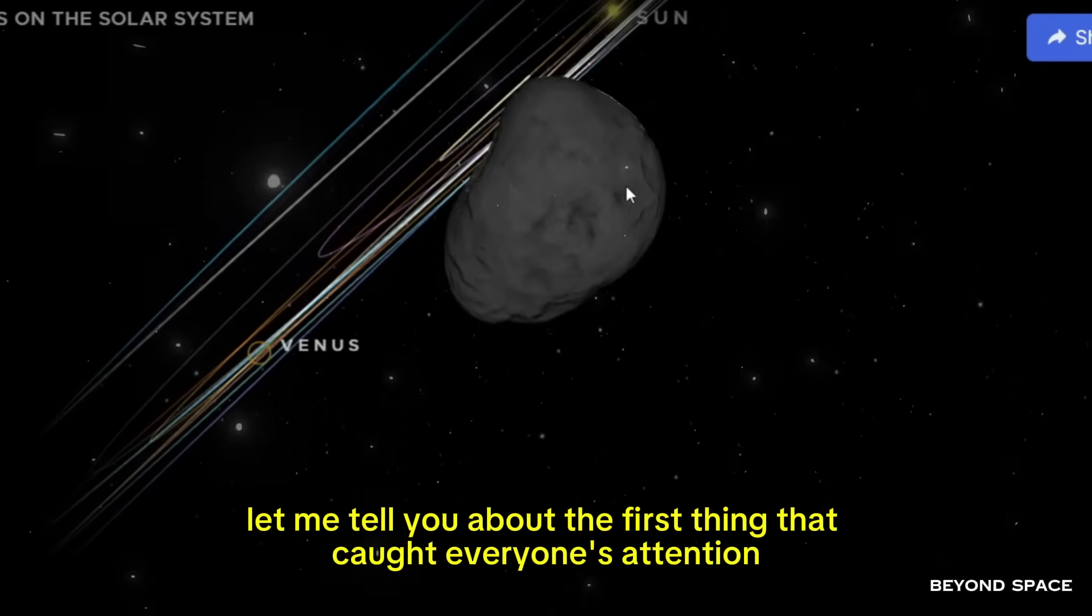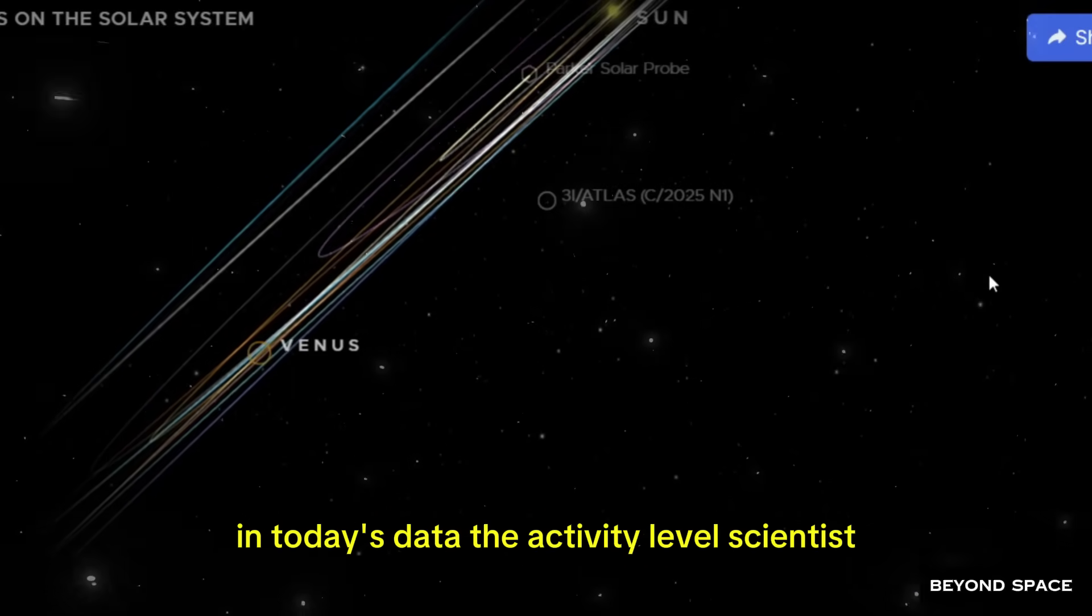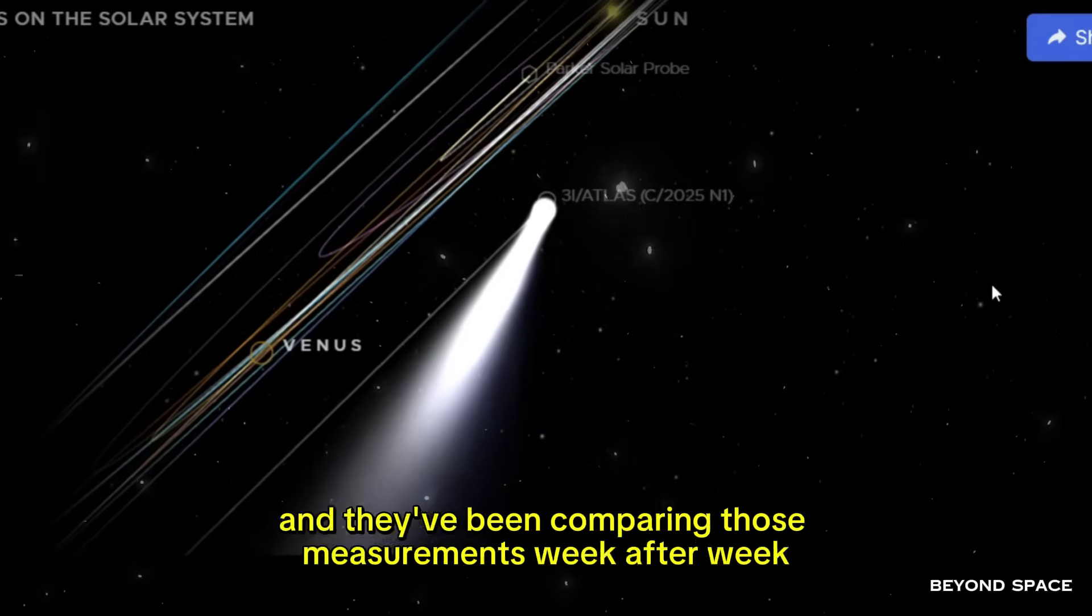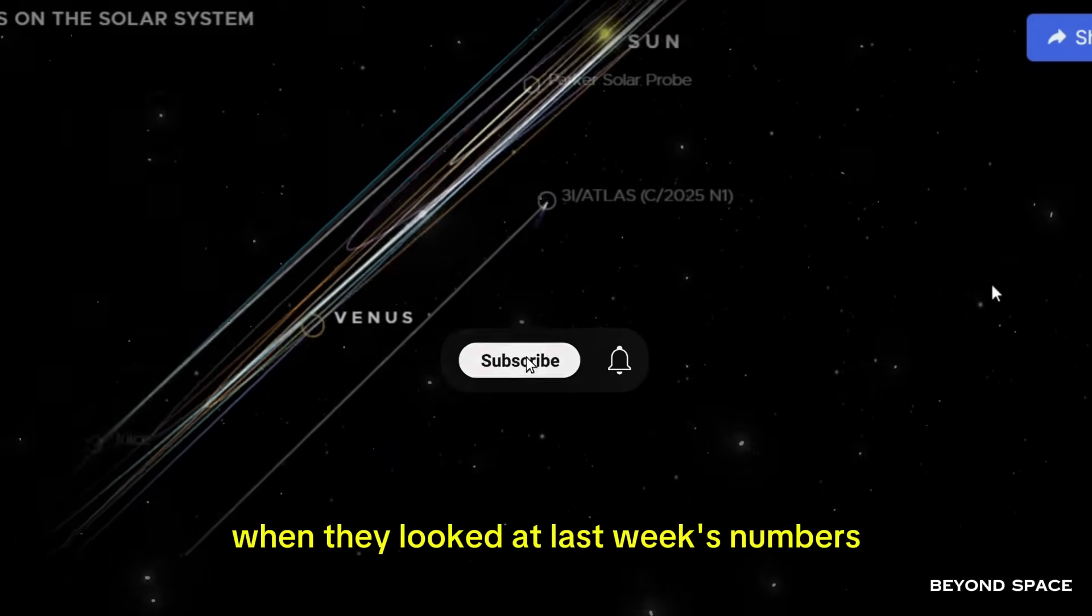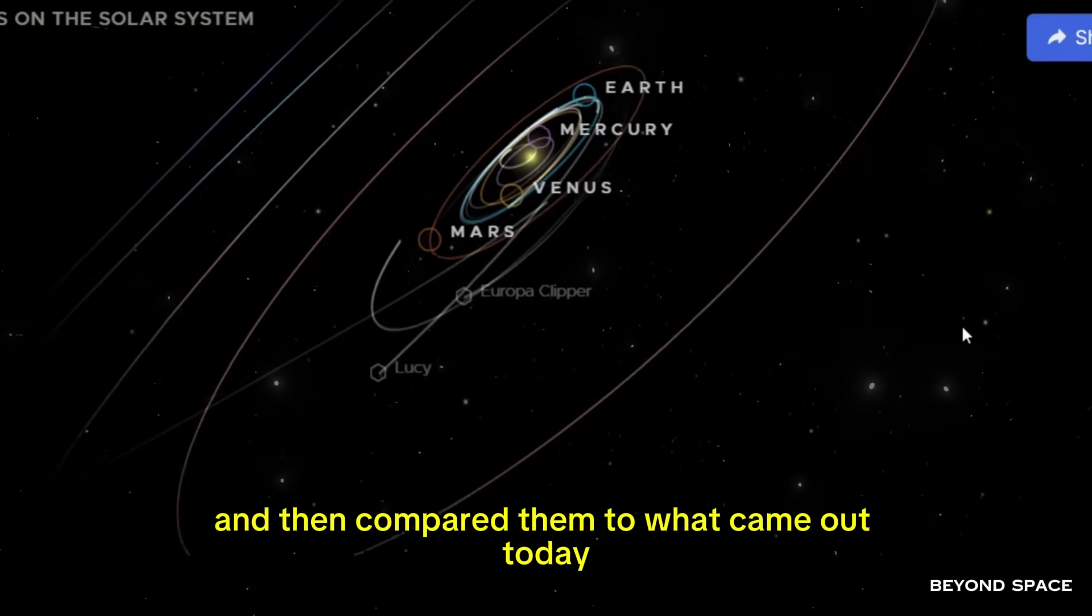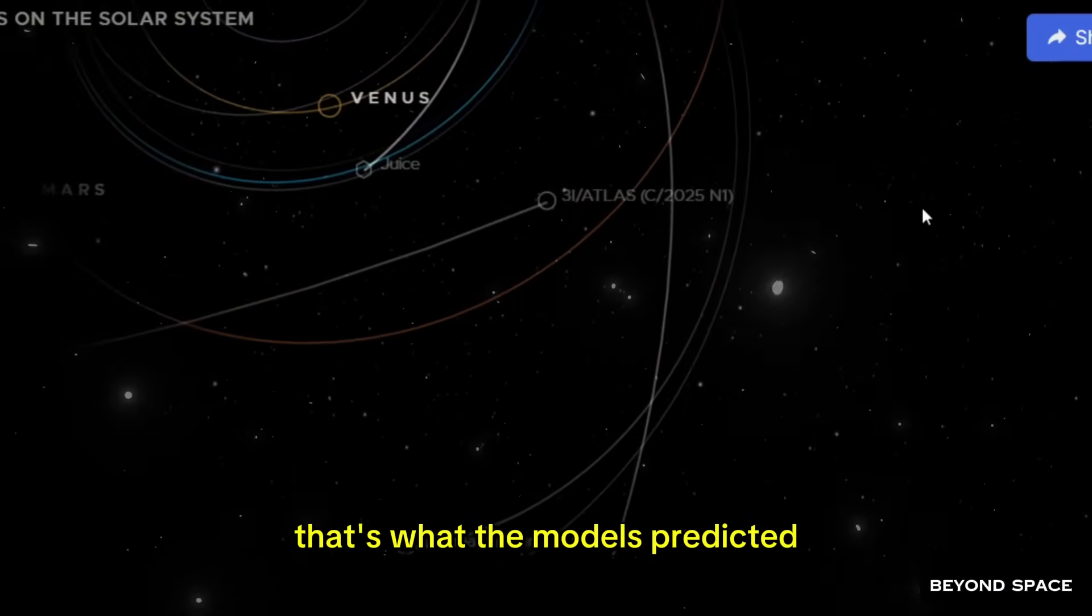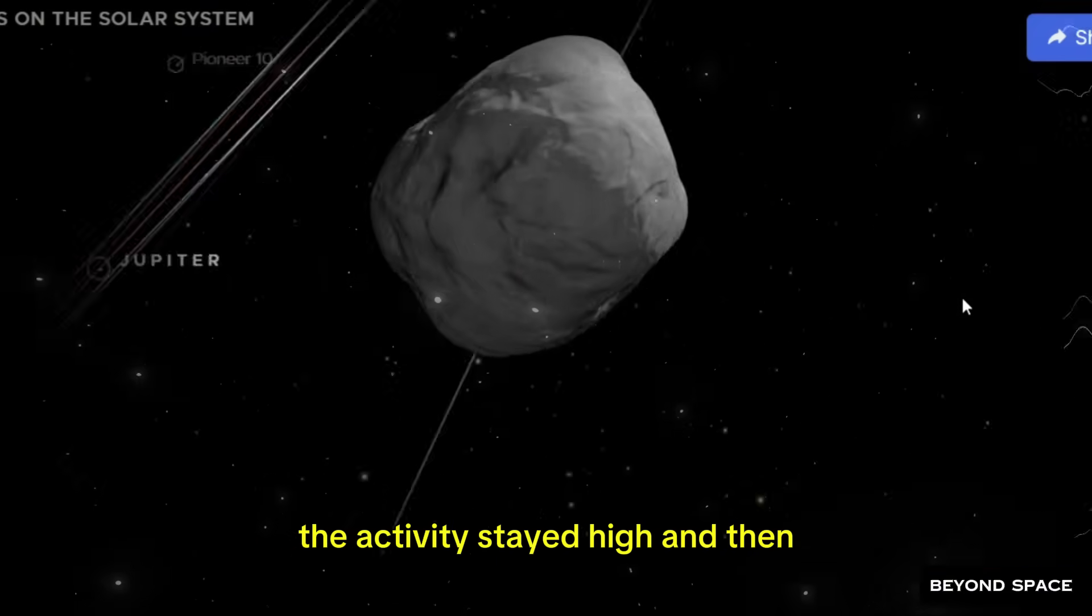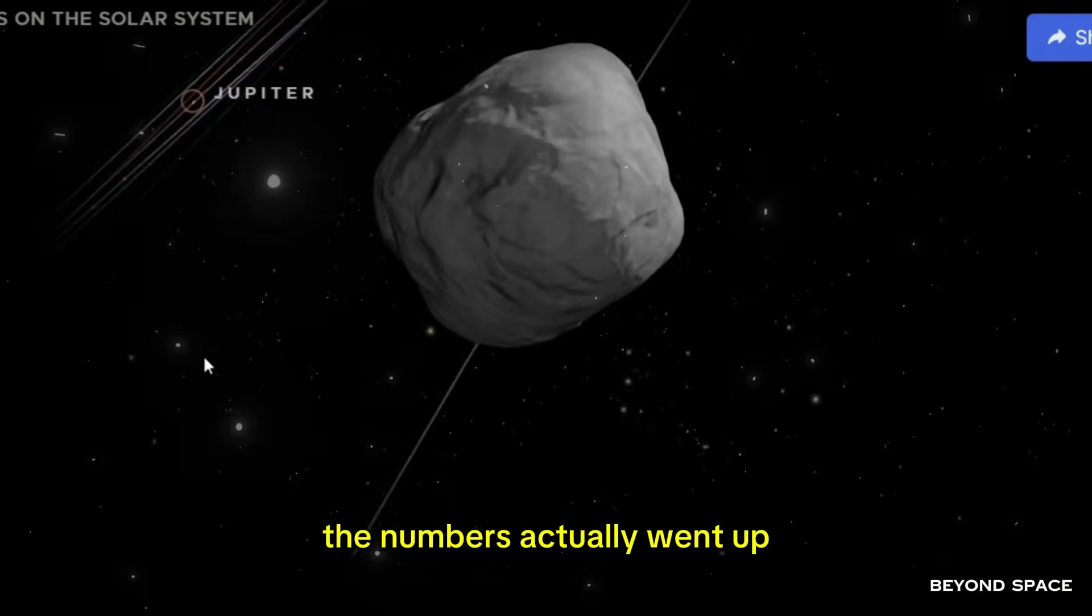Let me tell you about the first thing that caught everyone's attention in today's data. The activity level. Scientists have been carefully measuring how much gas and dust this comet is producing. They've been comparing those measurements week after week. When they looked at last week's numbers and then compared them to what came out today, they were expecting to see a steady decline. That's what the models predicted. That's what should happen. Instead, what they got was a plateau. The activity stayed high. And then, even more bizarrely, they saw a bump.